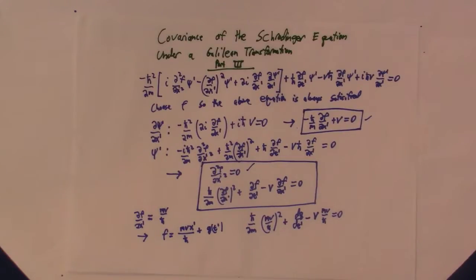So this is not hard to solve either. First of all, this is equivalent to the derivative of g with respect to t prime is equal to mv squared over 2h bar, because these two terms are equal and opposite and half of each other. So this implies g of t prime is equal to mv squared over 2h bar times t prime. I'm going to leave out the constant, it doesn't have any effect.